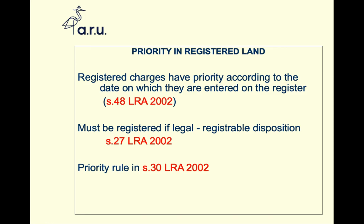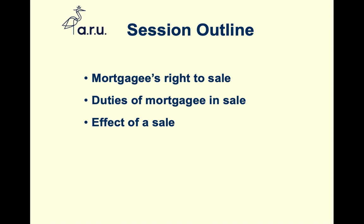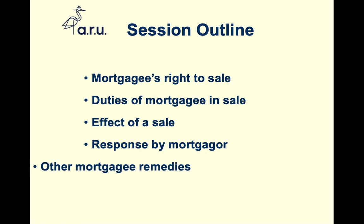Priority of mortgages is determined by date of registration — as illustrated by the Abbey National, Bradford & Bingley, and Chelsea example. To conclude: we've covered the right to sale and how a mortgagee should behave, the impact of a sale, and how a mortgagor can respond. As with repossession, where the property is in negative equity the borrower's response mechanisms are very limited. We've also briefly touched on the other remedies available to the bank. Mortgages is a very important topic, so this session required more depth.